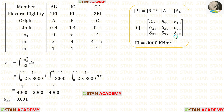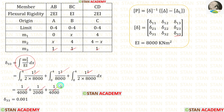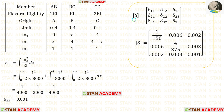Now let us find δ₃₃. The formula is ∫M3²/EI dx. Applying the values of M3 and integrating over all segments gives the values which, when added, give δ₃₃. We have now calculated all values of the flexibility matrix.